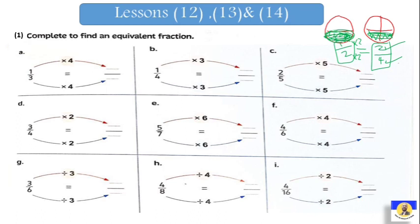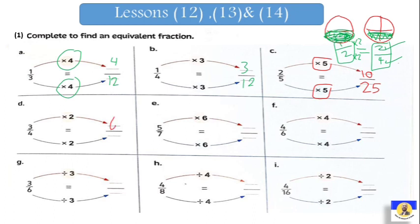Let's learn how we can find the equivalent fraction. If you have one over three and want to find an equivalent fraction, we can multiply up and down by any number — for example, by four: one by four equals four, and three by four equals twelve. Another example: one over four multiplied by three — one by three equals three, and four by three equals twelve. For two over five multiplied by five: two by five equals ten, and five by five equals twenty-five.